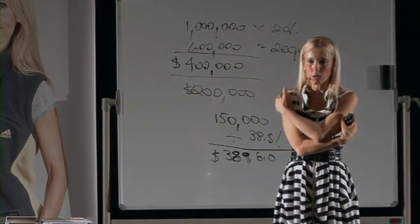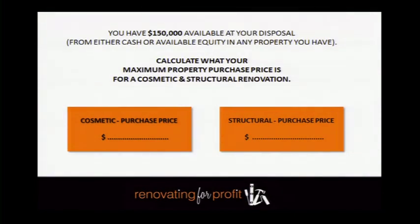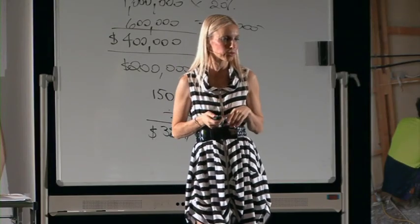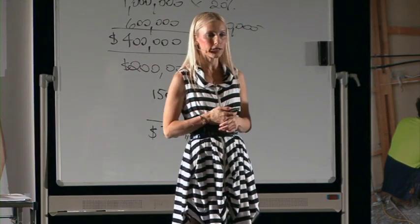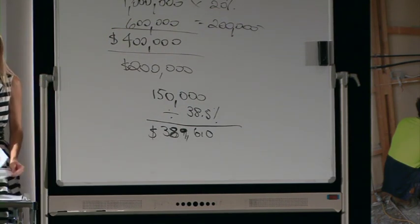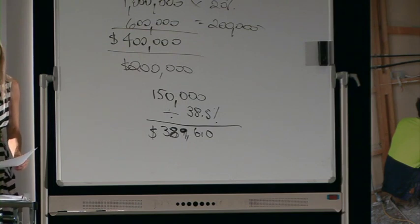We're going to do an exercise. In your workbooks, turn to the class exercise for cash affordability. If anybody truly doesn't understand this, put your hand up and one of my crew will come and explain it, because this is the part of the system that a lot of people struggle with. I'd like you to calculate: if you've got $200,000 cash at your disposal, what property price can you afford for both a cosmetic and a structural renovation? Use 38% for a cosmetic and 75% for a structural.